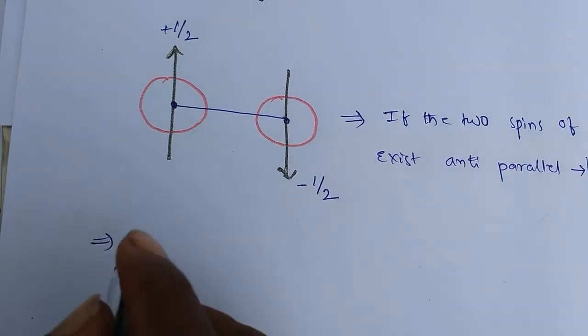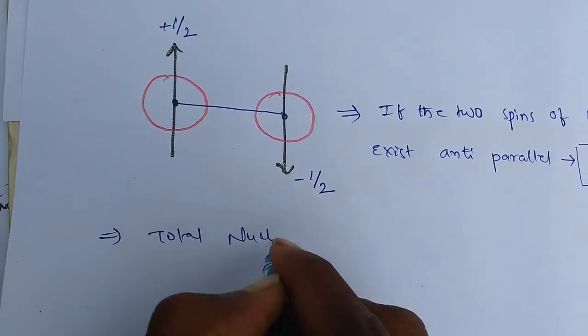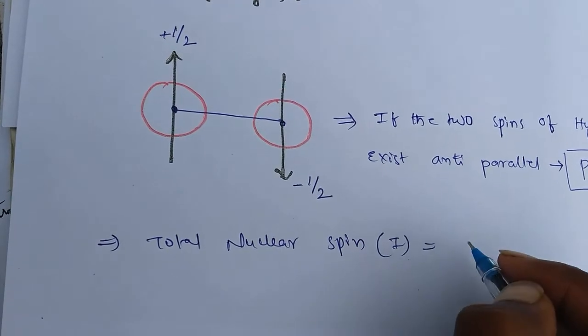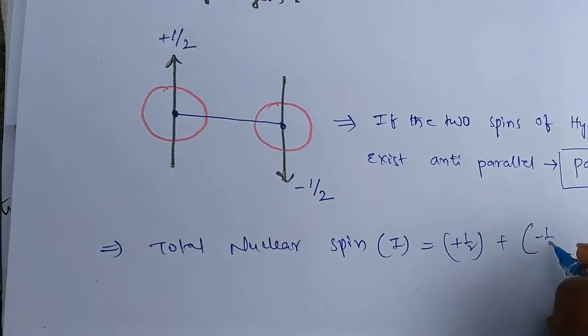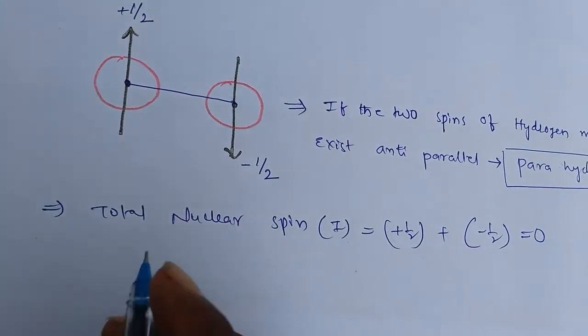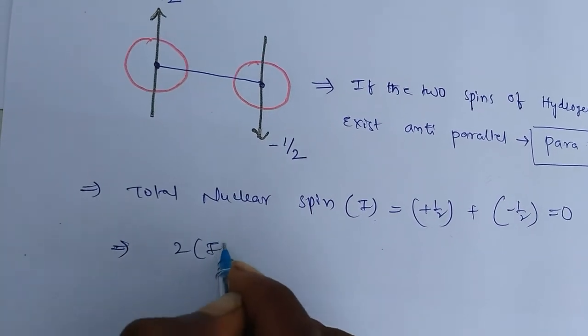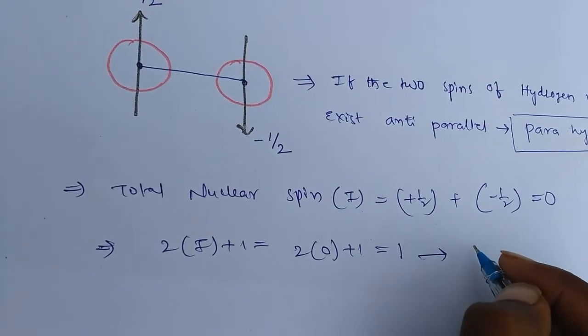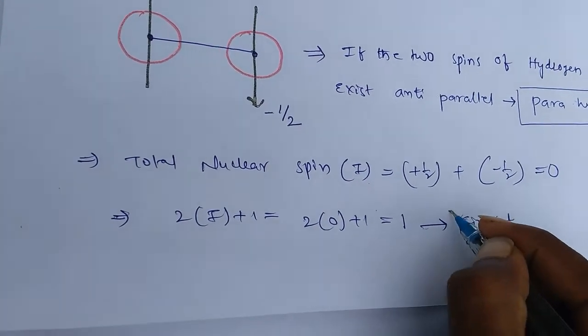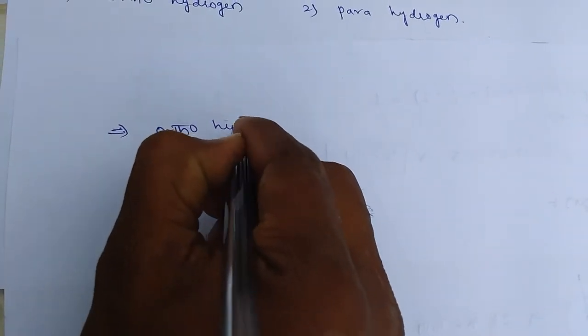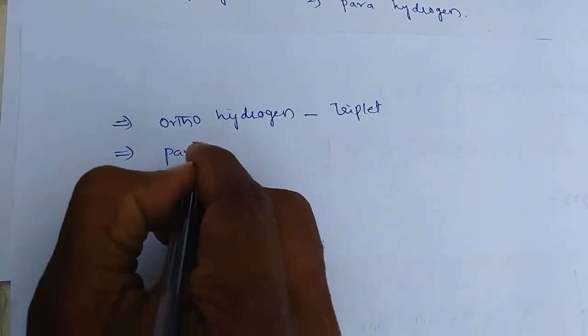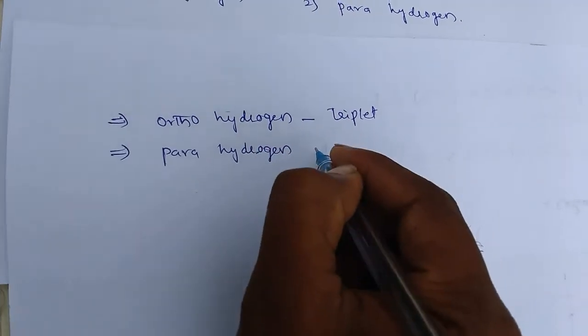So the total nuclear spin, that is I, equals to para-hydrogen is plus half plus minus half equals zero. So from this, by applying 2I plus 1 equals 1. So this means it is in singlet state. Ortho-hydrogen exists in triplet state and para-hydrogen exists in singlet state.